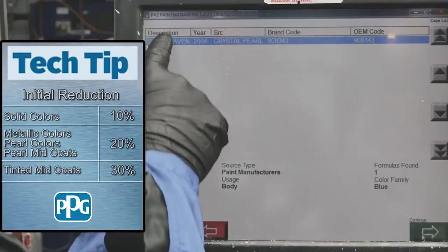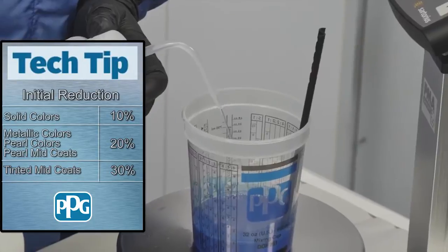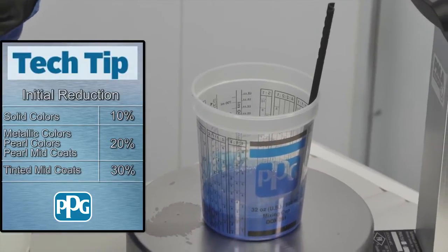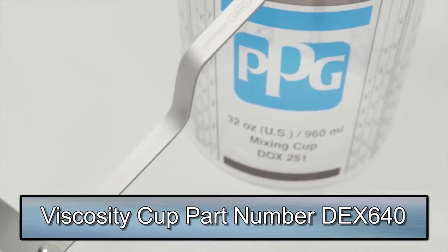First mix the color according to the formula, then reduce based on the type of color you mixed. It is important at this point that the painter check the basecoat's viscosity. To perform this process, a viscosity cup and a stopwatch are required.